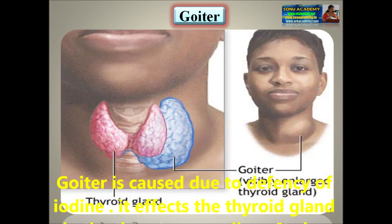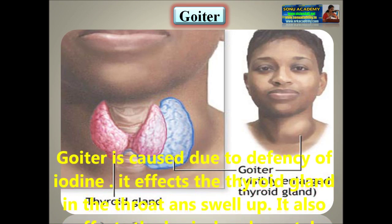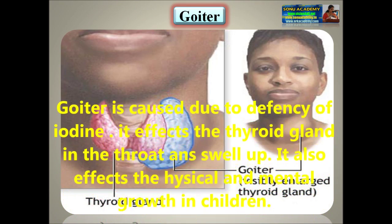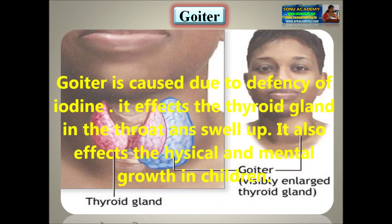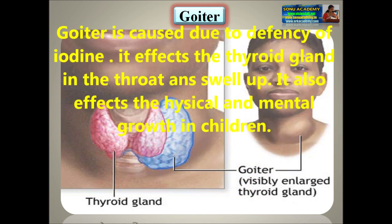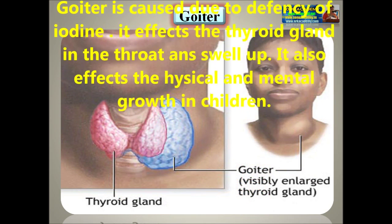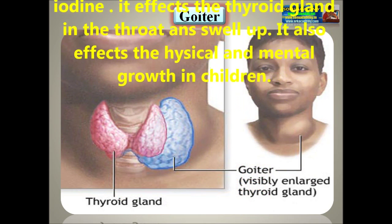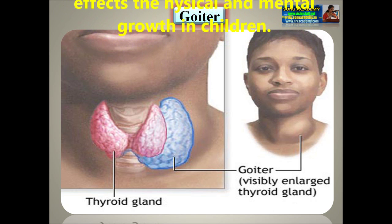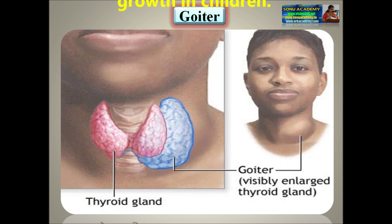Goiter is caused due to the deficiency of iodine. It affects the thyroid gland in the throat, causing it to swell up. It also affects the physical and mental growth in children.